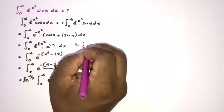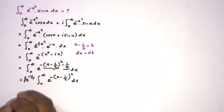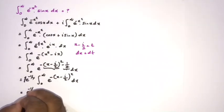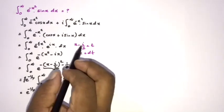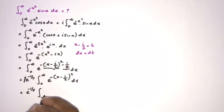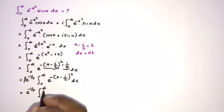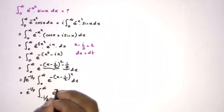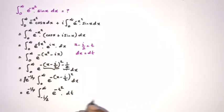I am going to take the substitution t equals x minus i over 2, so dx equals dt. When x approaches 0, t approaches minus i over 2, and when x approaches infinity, t also approaches infinity. So we get e to the minus 1 over 4 times the integral from minus i over 2 to infinity of e to the minus t squared dt.